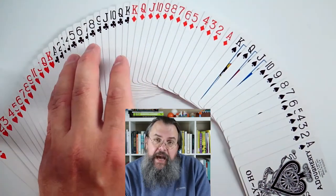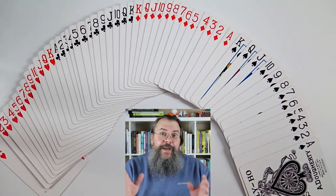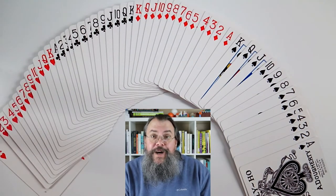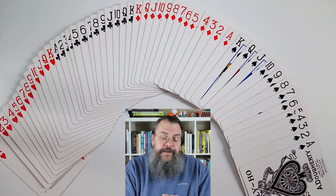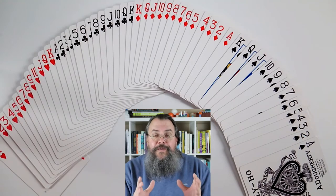You might also notice something interesting in that you start ace to king, ace to king, and then you kind of go back king, ace, king, ace. There's actually a beautiful reason for that, and hopefully if we have time I'll mention it at some point.